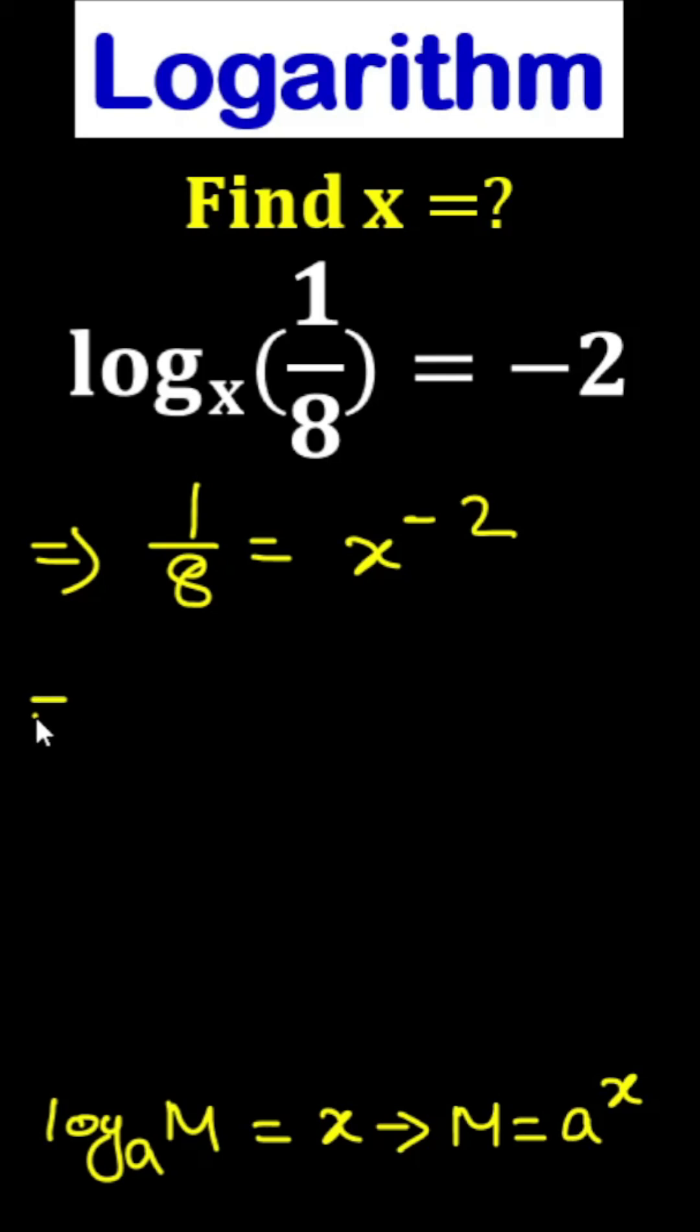So, this one we can write. So, 1 by 8 equals to x to the power minus 2 as per negative exponent we can write 1 by x square.